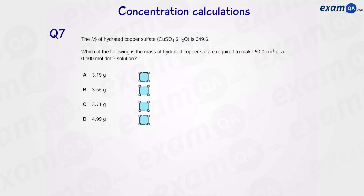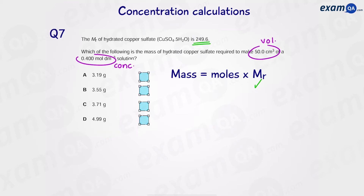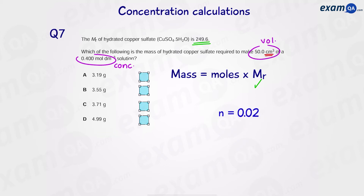Question seven: the MR of hydrated copper sulfate is 249.6. Which of the following is the mass of hydrated copper sulfate required to make 50 cm³ of a 0.4 molar solution? Since we want mass, we use: mass equals moles times MR, where MR is 249.6. We first work out moles using moles equals C times V over 1000 — that gives 0.4 times 50 over 1000 = 0.02 moles. Then mass equals 0.02 times 249.6 = 4.99 grams, which is answer D.